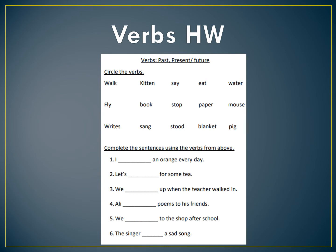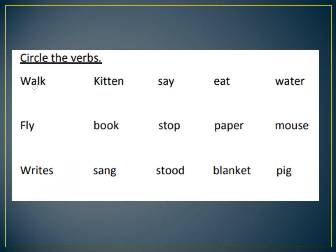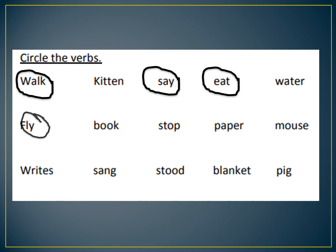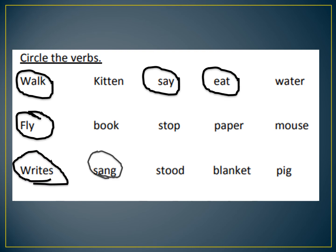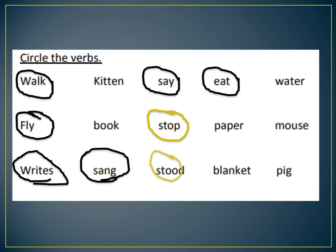Now let's move on to the homework. The video I sent last week didn't cover all the homework — I wanted to give those who hadn't completed it yet another day to finish. Here's what the first page of the homework looks like — Verbs homework. Circle the verbs: walk, say, eat, fly, writes, sang. Stop and stood are highlighted in yellow because depending on the sentence they occur in, they can act as nouns or verbs, but for this homework they were verbs.